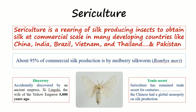Thailand, and Pakistan. About 95 percent of the commercial silk has been obtained from the mulberry silkworm, that is Bombyx mori. So how was sericulture or the silk production mechanism discovered?